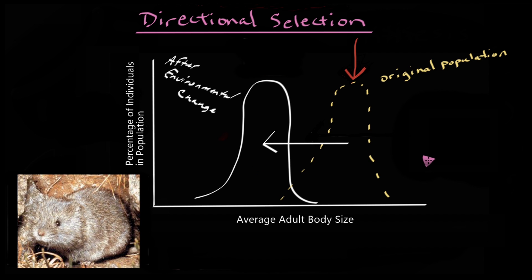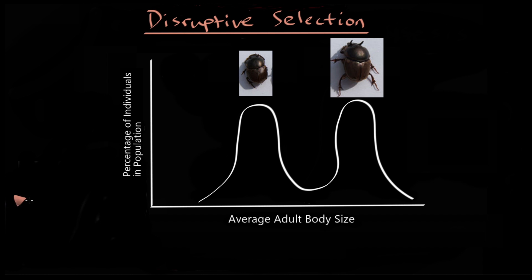Directional selection events are those which favor one extreme while excluding another. However, change itself can be as diverse as the organisms it changes, and thus you can also get circumstances where selection favors both extremes. This is called disruptive selection.